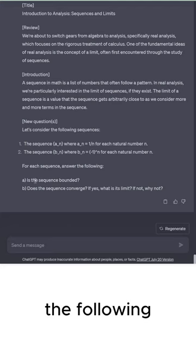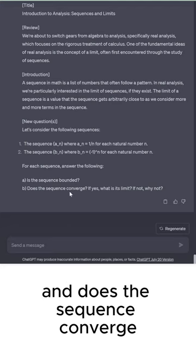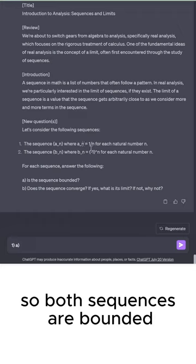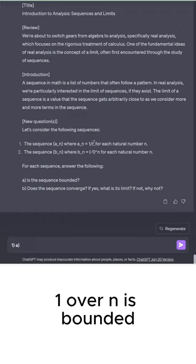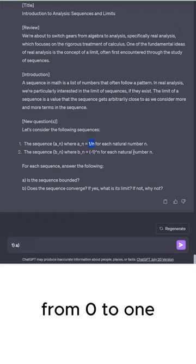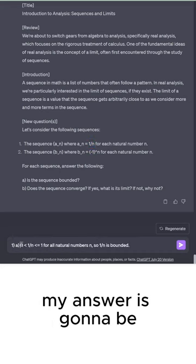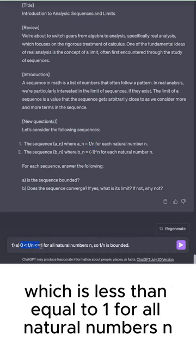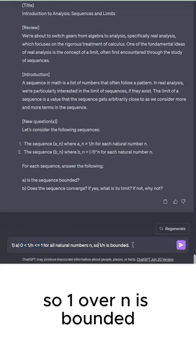And for each sequence, answer the following. Is the sequence bounded and does the sequence converge? So both sequences are bounded. 1 over N is bounded from 0 to 1. My answer is going to be 0 is less than 1 over N, which is less than or equal to 1 for all natural numbers N. So 1 over N is bounded.